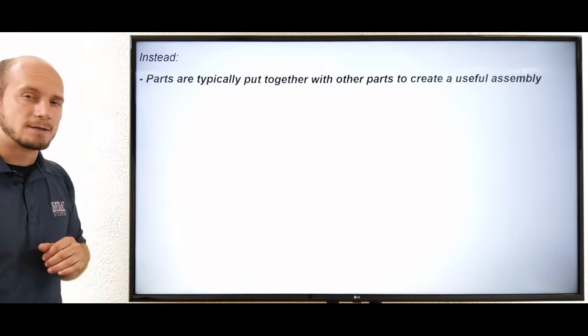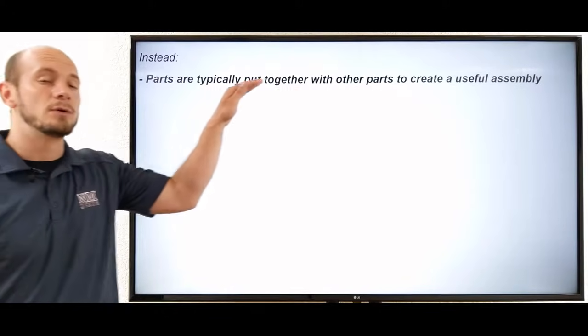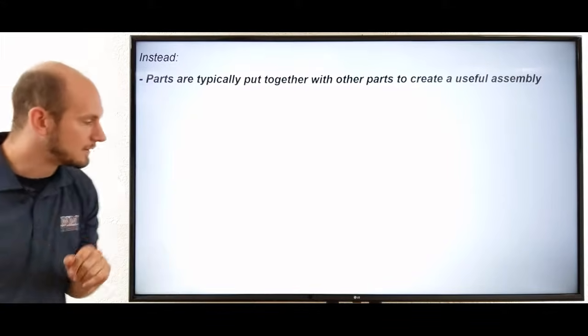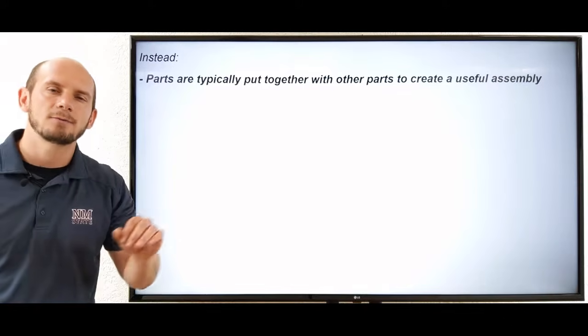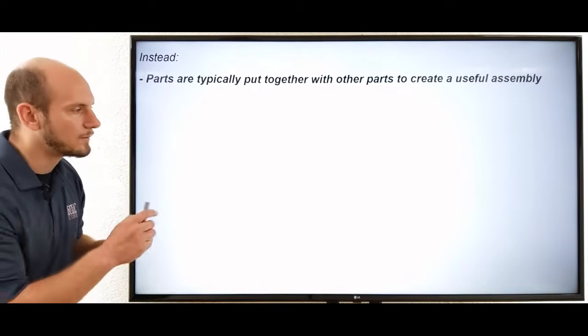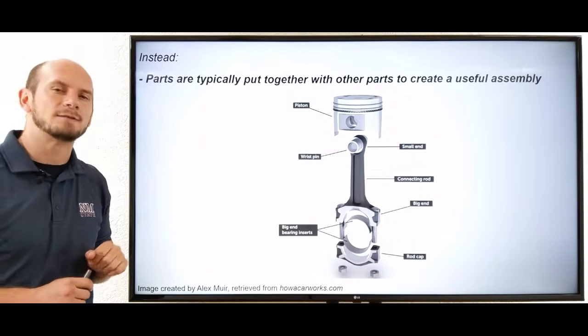So the next concept we need to understand then is this: Parts are typically put together with other parts to make a useful assembly. Now what do I mean by this? If we took that piston, that connecting rod and that wrist pin, all by themselves are not very useful. But if we put them into this assembly, now all of a sudden we have something useful.